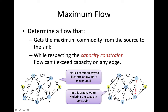We can spot-check a flow: here we're using 3 out of 7 available units of capacity; up here we're using all the capacity for this edge. Down here we've got an edge that's not pushing any commodity. We're trying to find the maximum flow — the most we can get from source to sink. Is this a maximum flow? There's plenty of available capacity in places, like here you're only using 2 of the available 9 capacity.